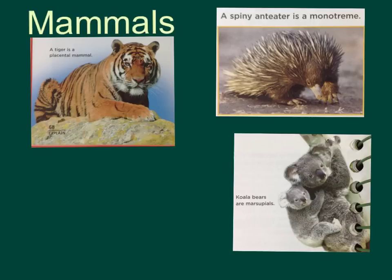Again, the three subgroups are monotremes, marsupials, and placental mammals. That's everything we need to discuss today with classifying animals. Remember your lower invertebrates — your simple ones — and your more complex invertebrates. Invertebrates don't have a backbone. Vertebrates do have a backbone and include your birds, your reptiles, your amphibians, your fish, and your mammals. Also remember about symmetry: asymmetrical means no symmetry at all; radial symmetry is symmetry based around a central point; and bilateral symmetry is how you divide one image with one line and get two mirror images. If you have any questions about Chapter 1, Lesson 4, Classifying Animals, please feel free to ask me or send me a message on Edmodo.